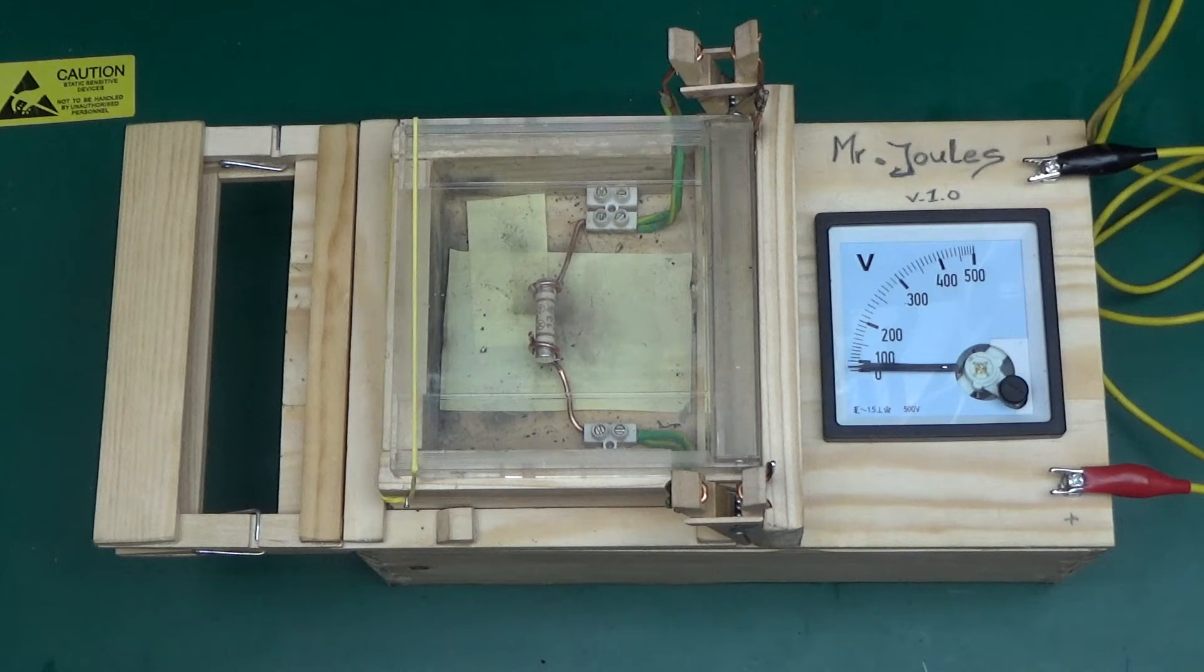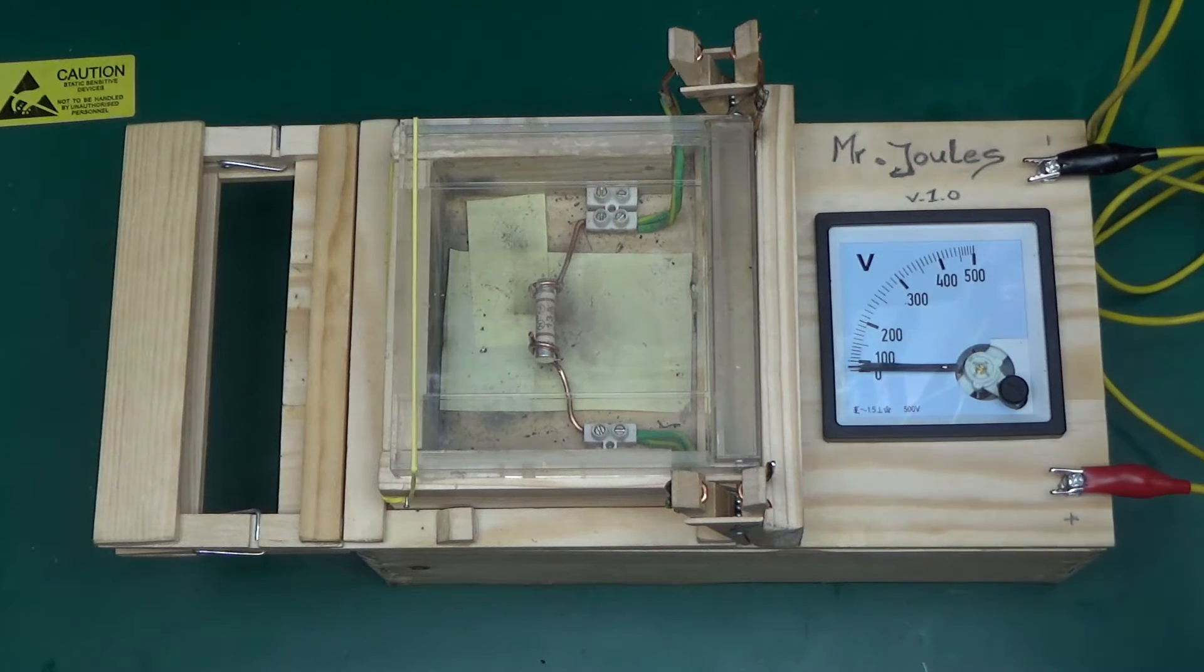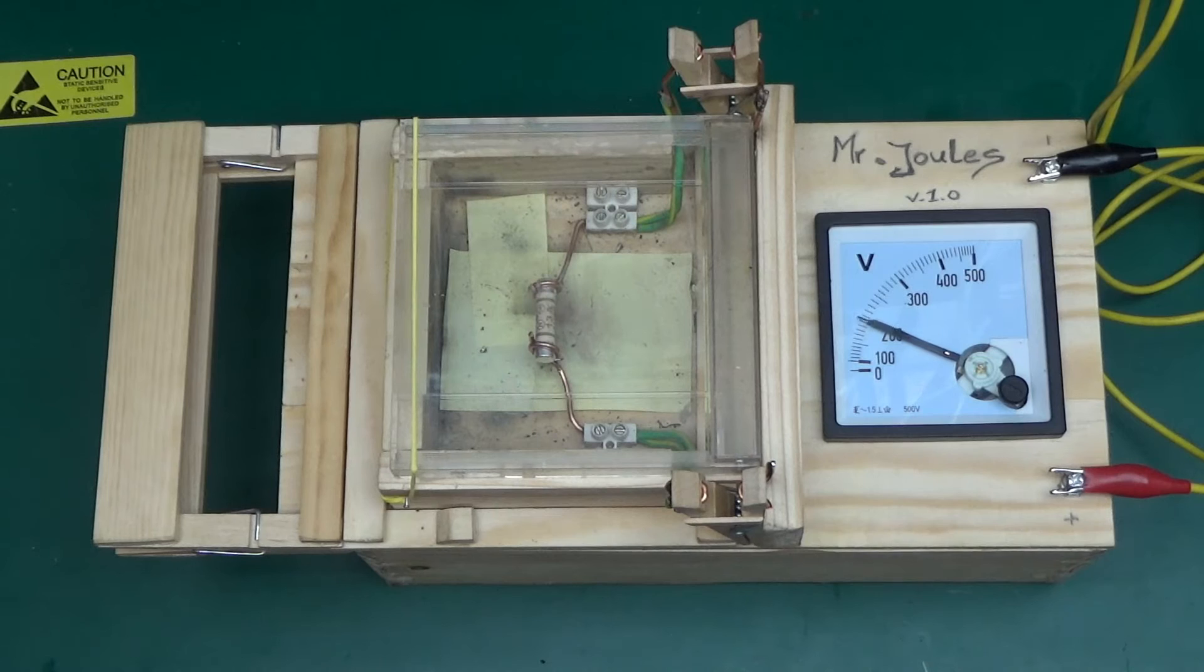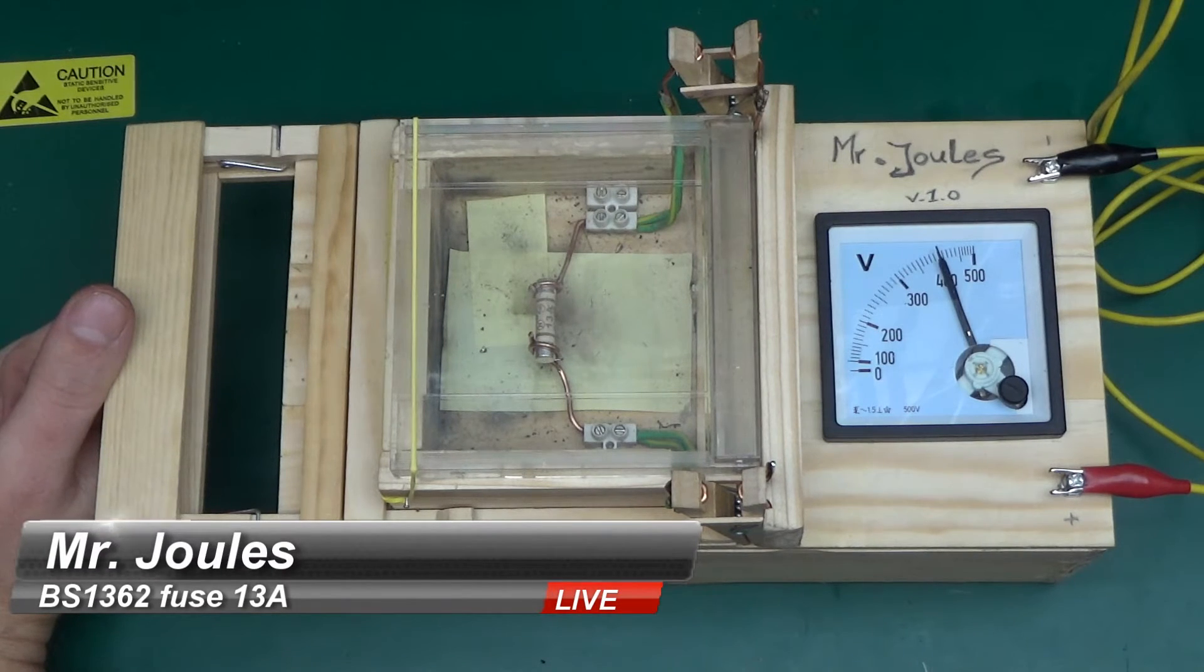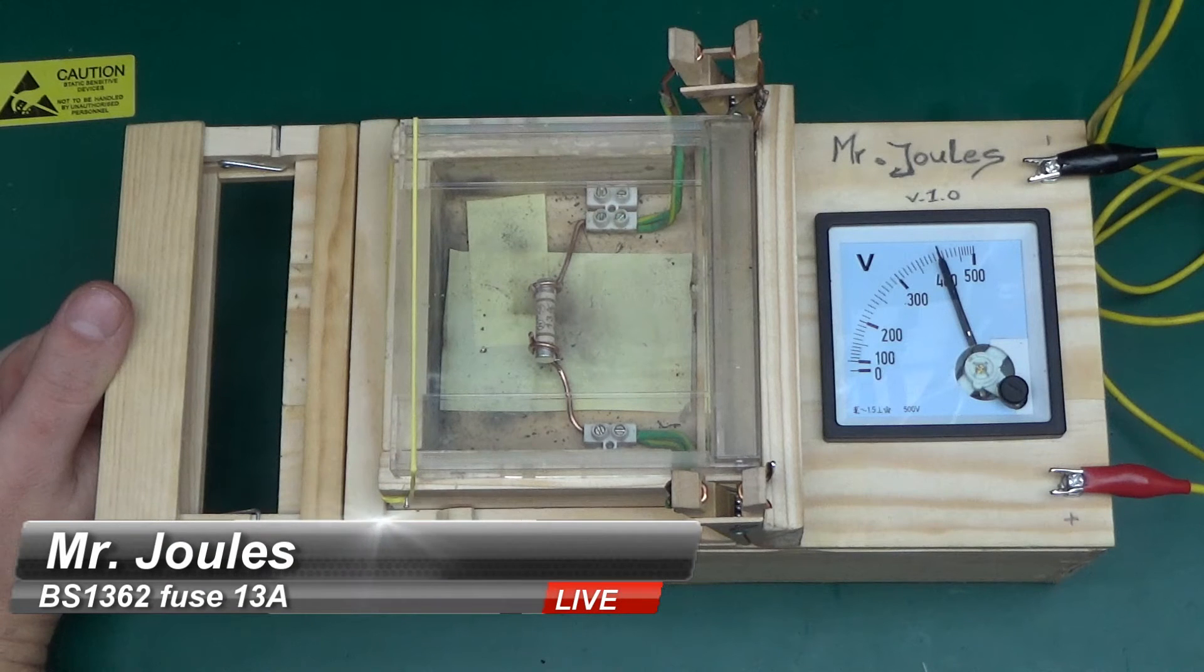And here is the 13 amp fuse BS 1362 standard. Let's have a look. The brown variety will do any worse than its smaller rated cousins. Power on. And Mr. Jules is charging. So it's nominal 400 volts. And let's see. This is BS 1362, 13 amp rated fuse in three, two, one.